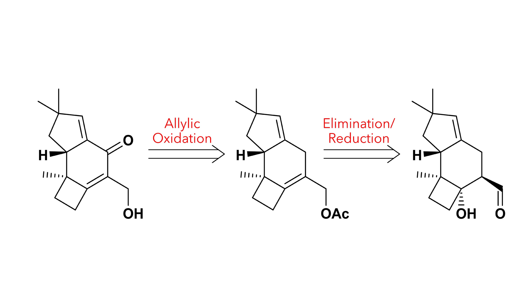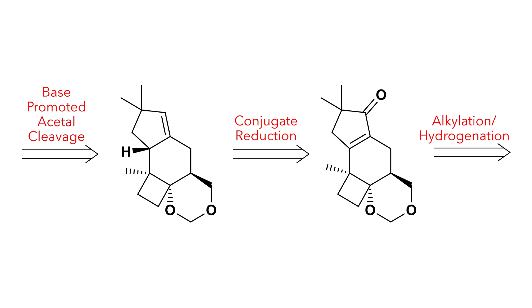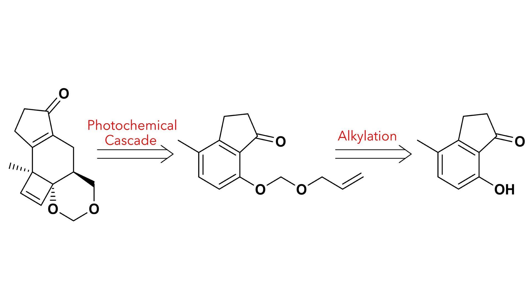So let's start by looking at the retrosynthesis. The first disconnection occurs at the carbonyl group, which would be installed using an allylic oxidation. The precursor to this could be generated from a beta-hydroxy aldehyde, which could be made using a base-promoted acetal cleavage of a protected diol. The cyclopentanone could be constructed using a conjugate reduction of an alpha-beta unsaturated ketone, and the cyclobutane would be installed by hydrogenating a cyclobutene ring. This heavily functionalised intermediate could be synthesised in one step using a photochemical cascade of an allylated aromatic compound, which could be made using a simple alkylation reaction of a functionalised phenol.